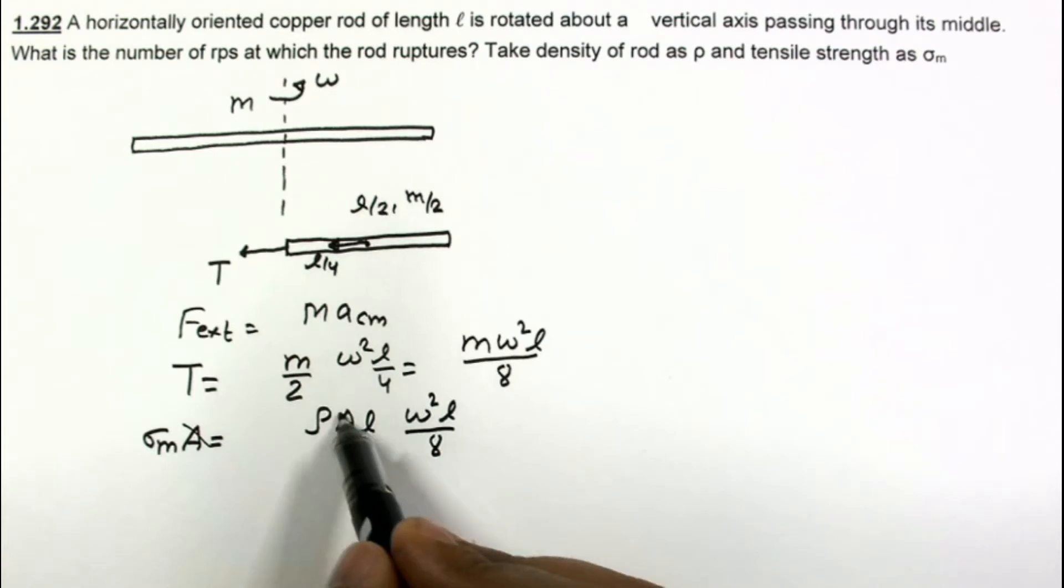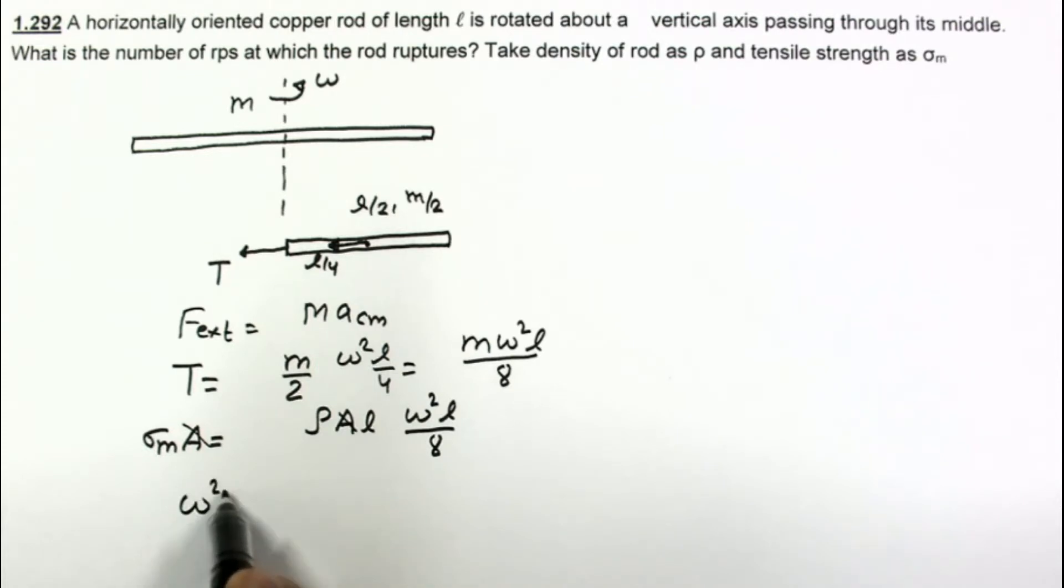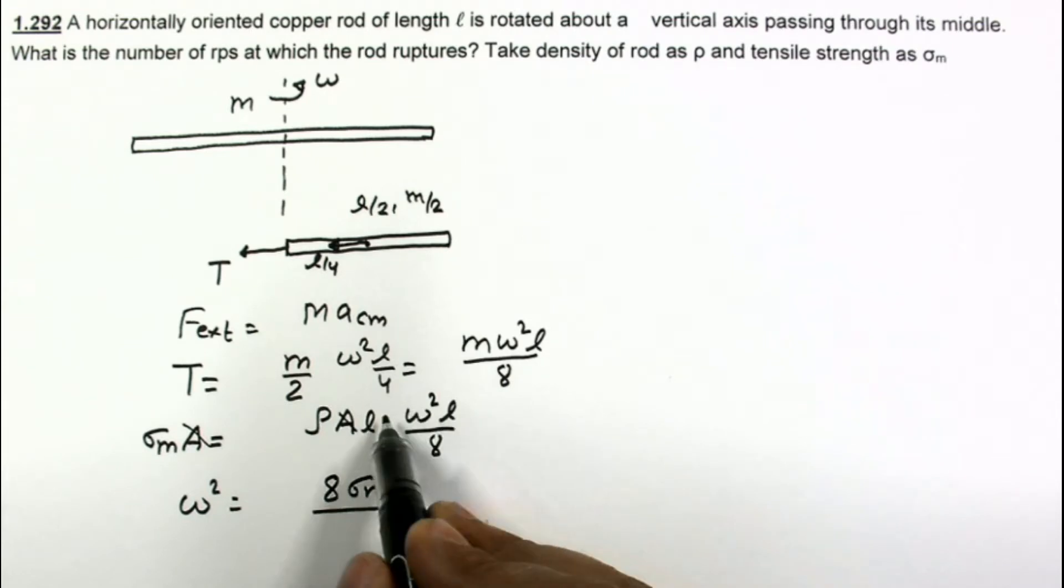This A will get cancelled and we have to find the value of ω. ω² is 8σ_m divided by ρl.